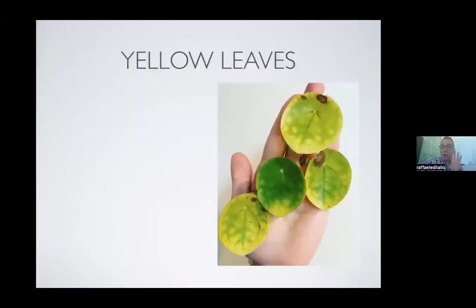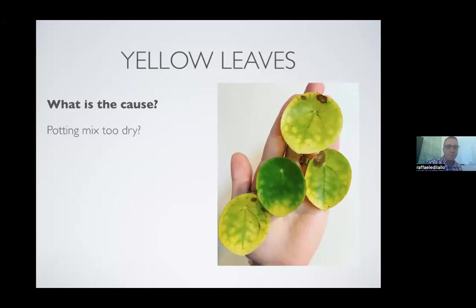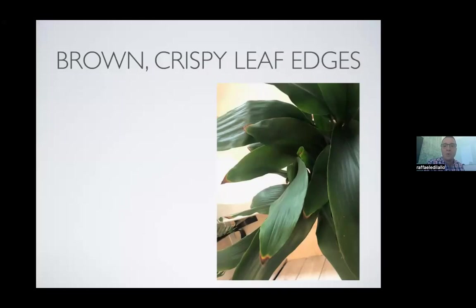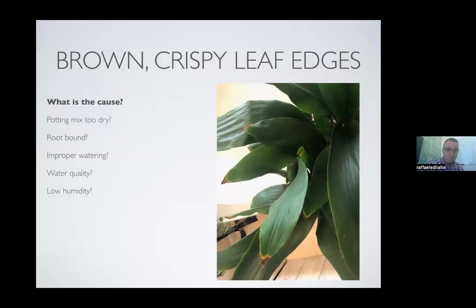Yellow leaves is another very common issue. These leaves are from my pilea peperomioides, or Chinese money plant. Is the potting mix too dry? Is it root rot? Is it too little light? All of these can cause yellow leaves. Another super common issue is brown crispy leaf edges — this is my aglaonema or Chinese evergreen. You can see there are a lot of brown tips. What could cause that? Too dry a potting mix, root bound, improper watering, water quality, low humidity, or fertilizer burn — all of these can cause brown leaf tips.